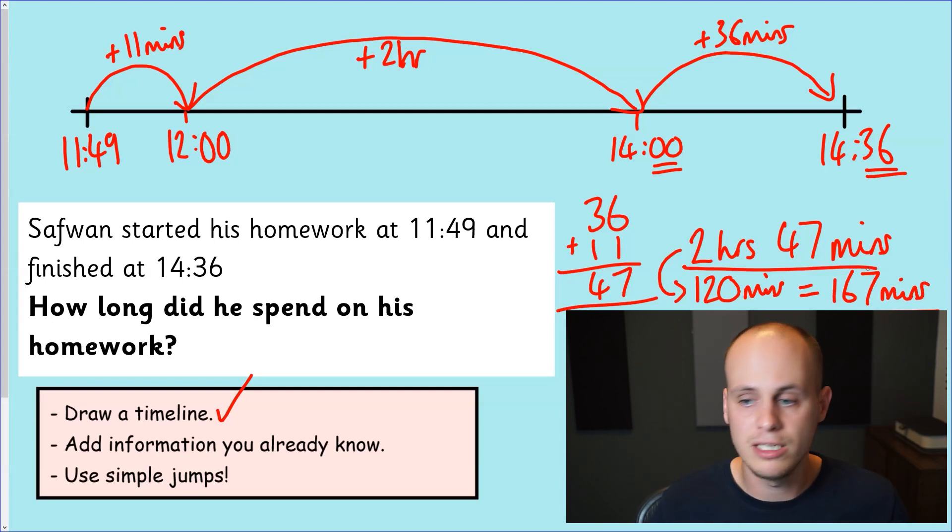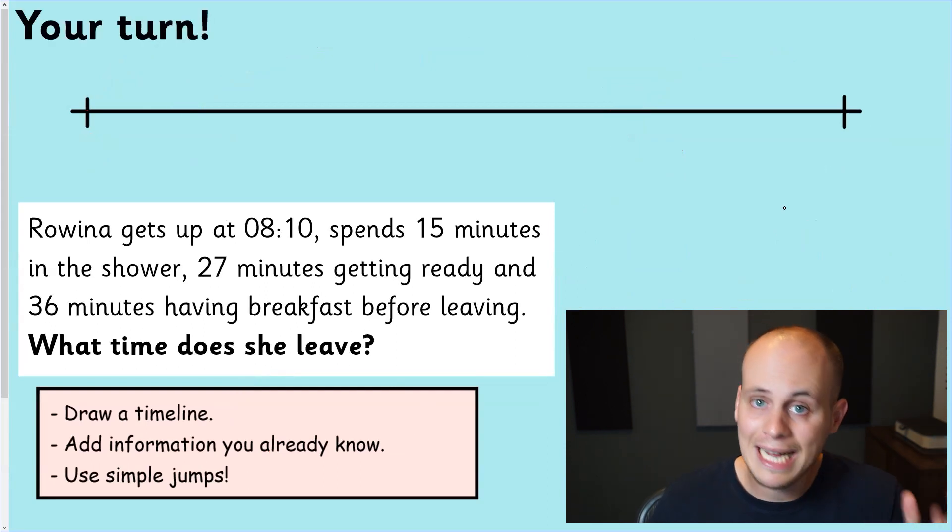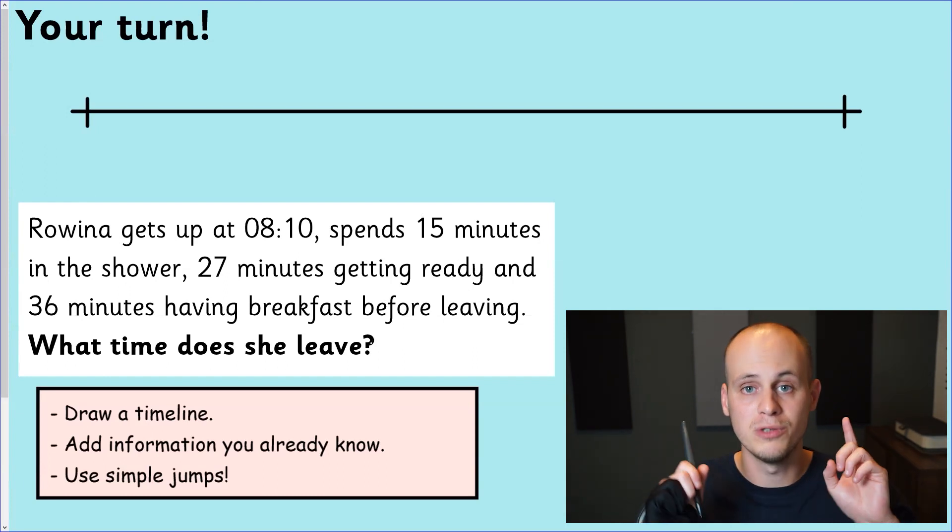Doesn't matter how it's presented because we know what to do. We've used timelines, simple jumps and those hour checkpoints as well. We've been very successful in this video so far. It's your turn. I've added in a little bit more challenge for this question as well. So the question, I'll read it to you, but I want you to answer this. And let me know in the comments what you got. Can you draw a number line and solve this in the way we've been solving it today? Rowena gets up at eight to ten, spends 15 minutes in the shower, 27 minutes getting ready and 36 minutes having breakfast before leaving. The question is, what time does she leave? I look forward to reading your comments and we'll see you in the next video.